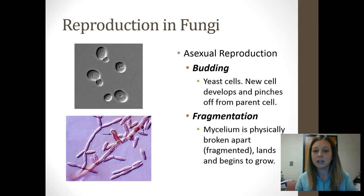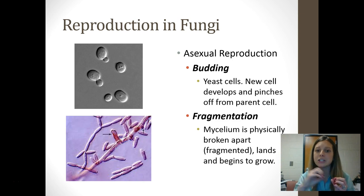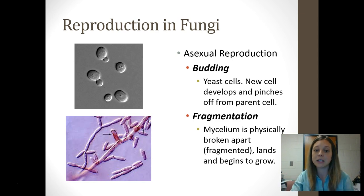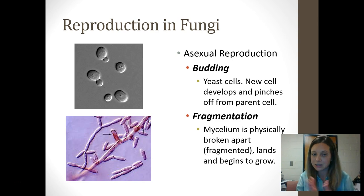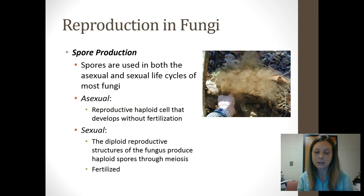Some reproduction vocabulary for fungi. Types of asexual reproduction include budding, which happens in unicellular fungi like yeast, where a new cell pinches off from the original parent cell. There's also fragmentation, in fungi that have mycelium, where the mycelium is physically broken apart, lands somewhere, and begins to grow as its own separate organism. Since there's only one original parent, the new fungus is going to be genetically identical to the original.